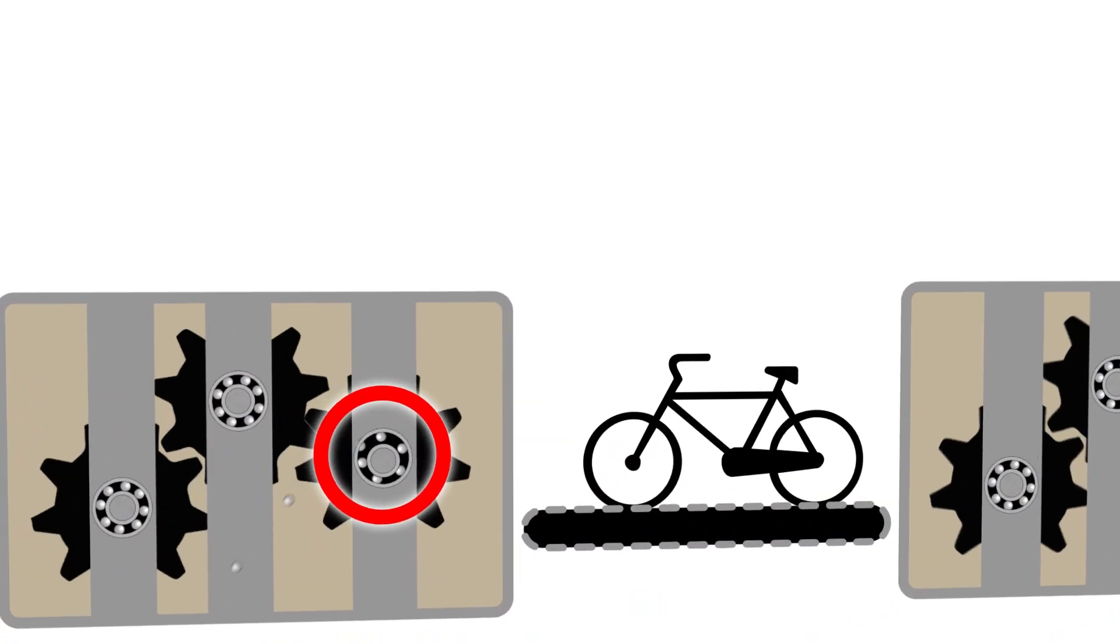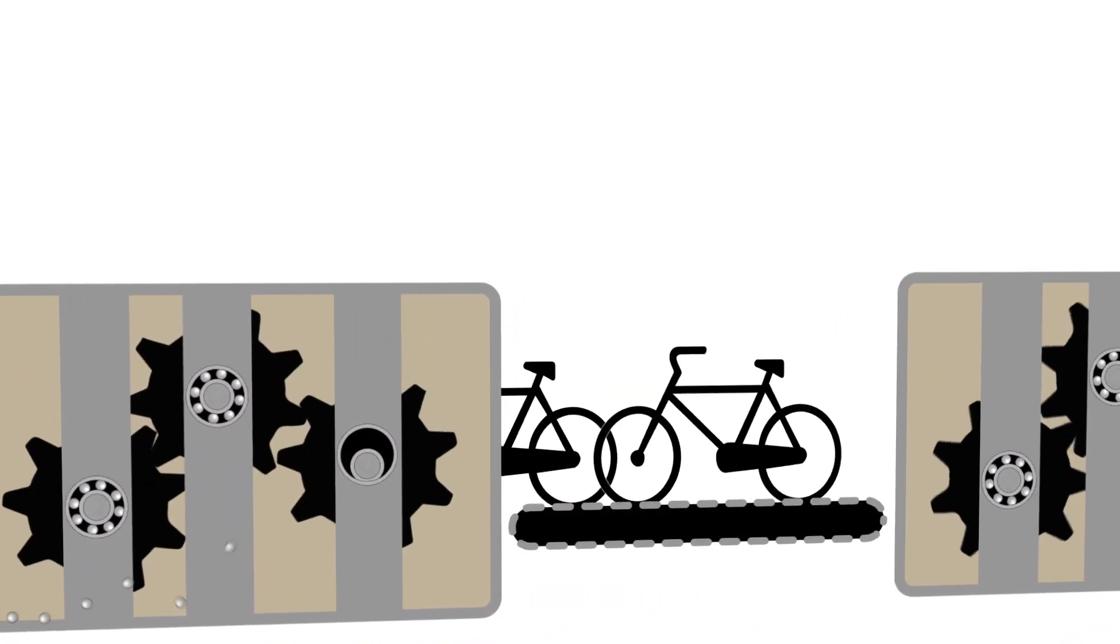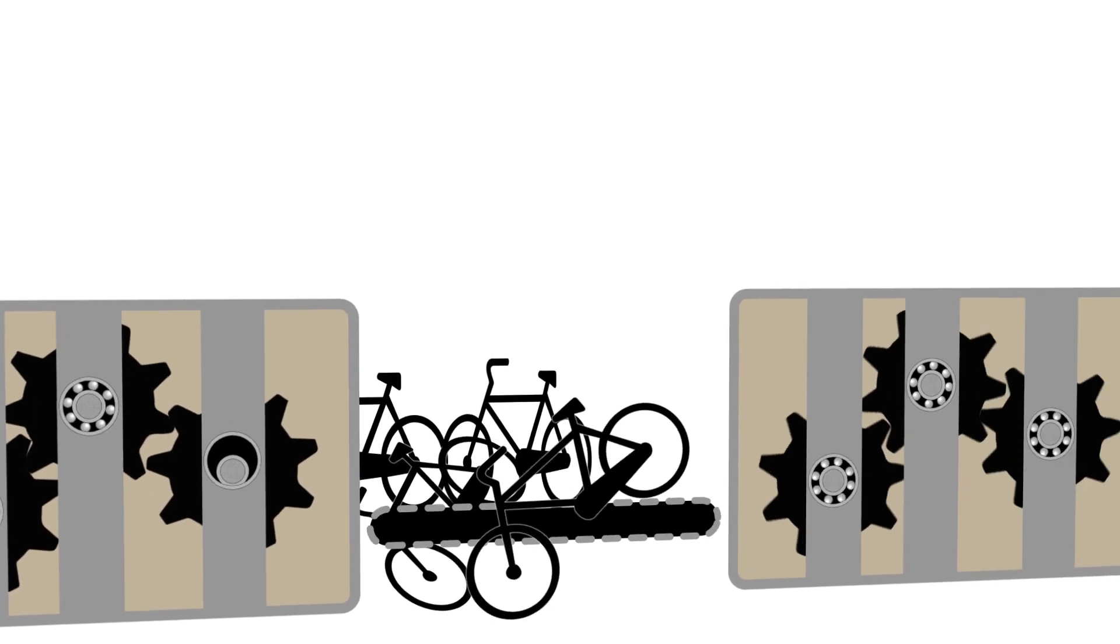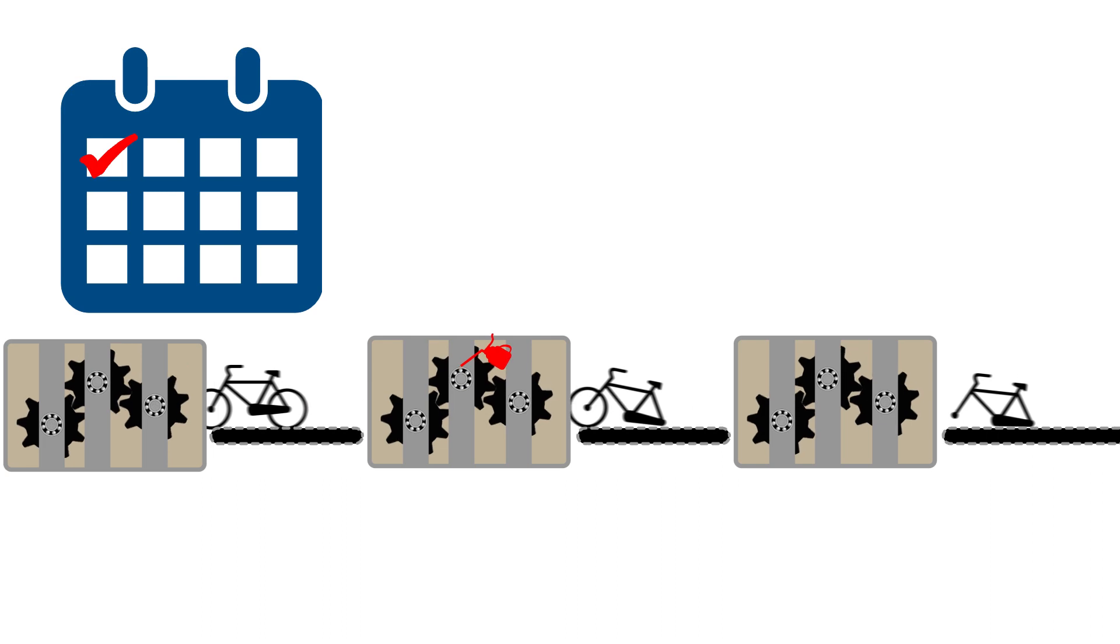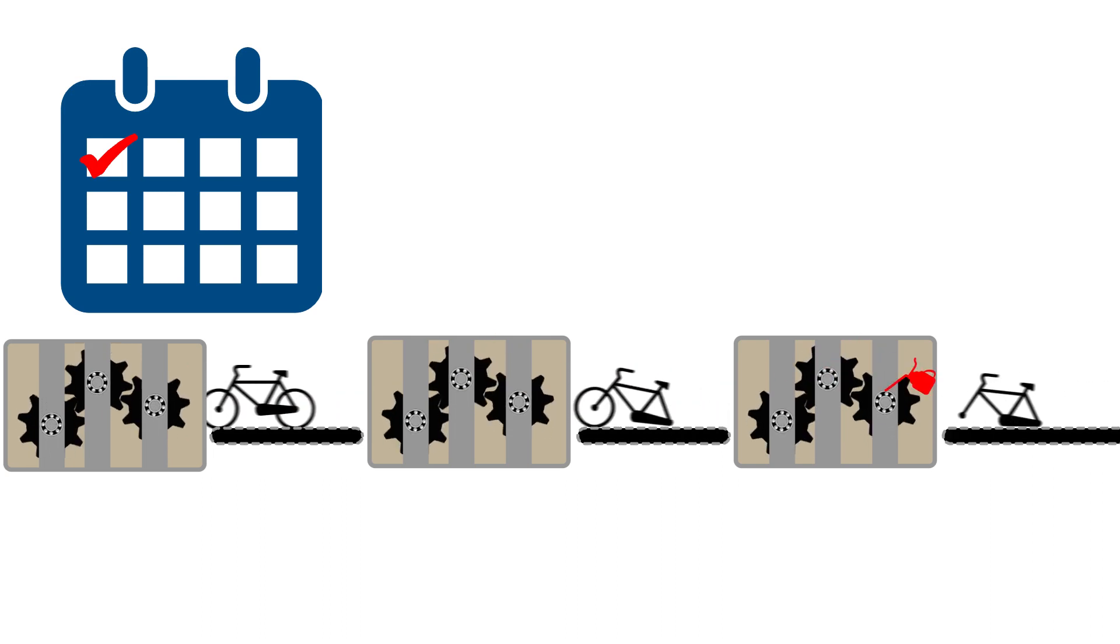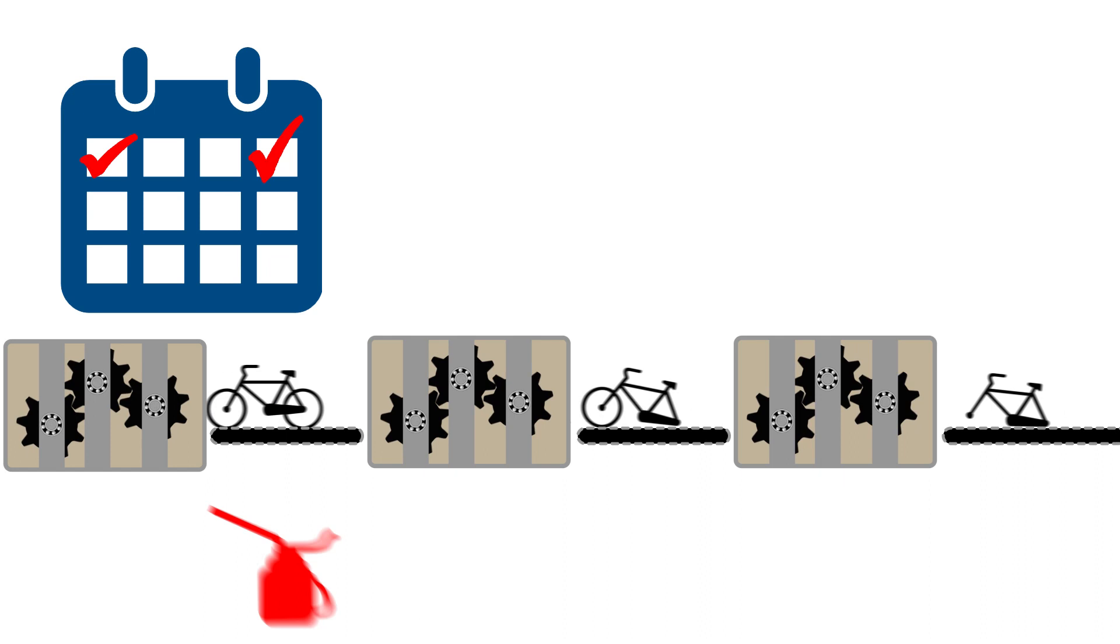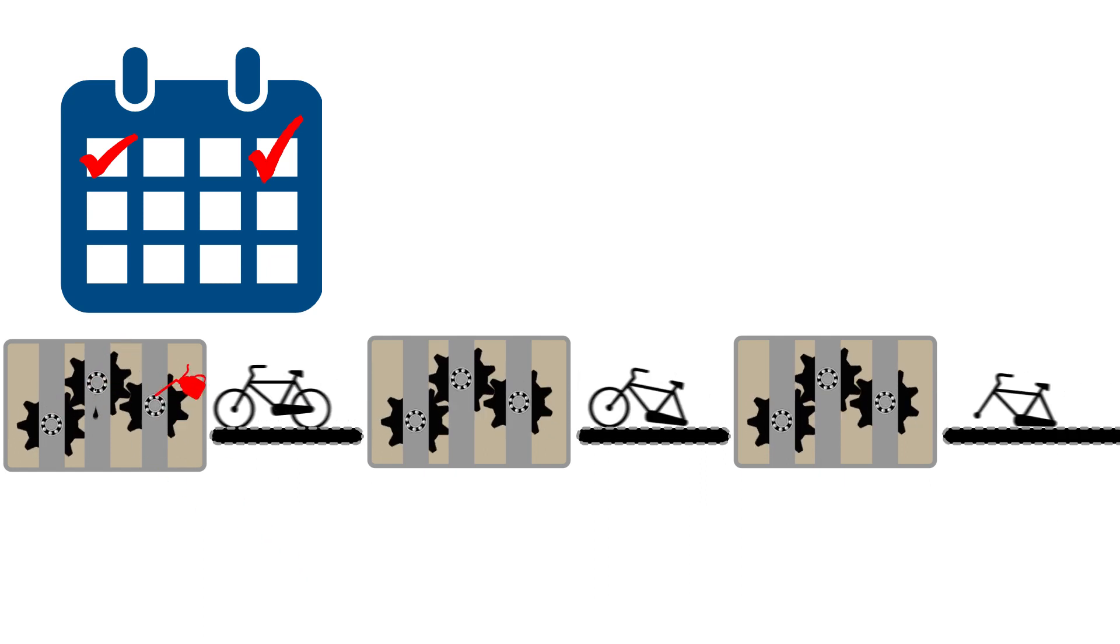Poorly lubricated bearings are a primary contributor of premature machinery failure. A common mistake is to grease bearings based on time intervals instead of condition. This wastes time and lubricant and contributes to over-lubrication.